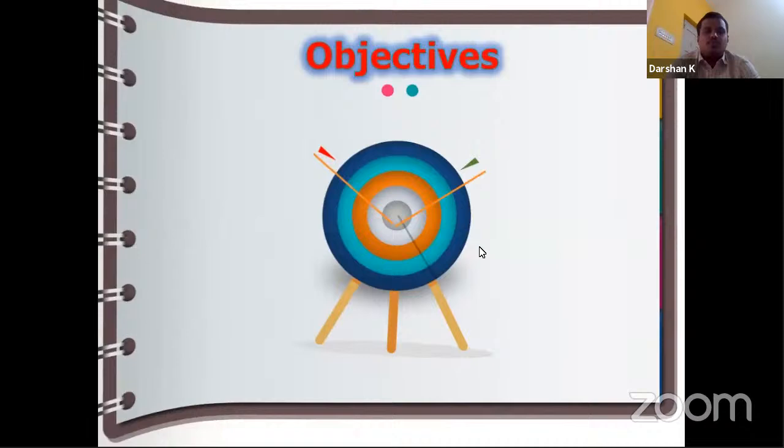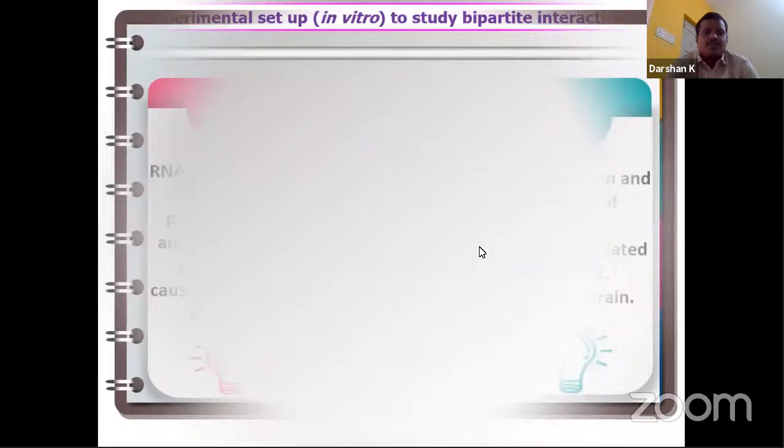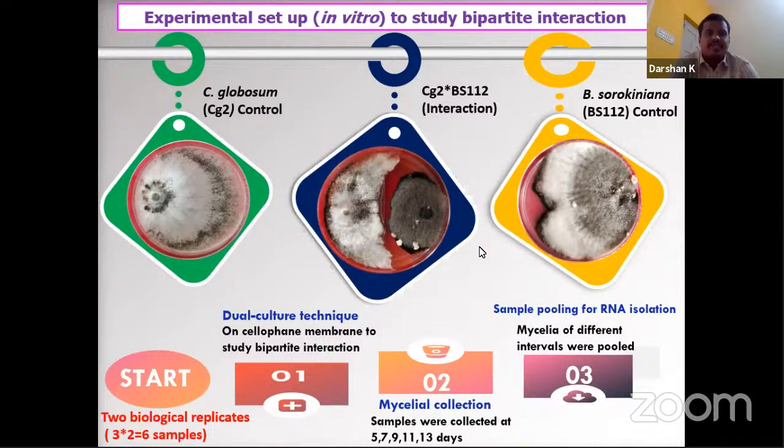The study has two objectives: first, transcriptomic analysis, and second, characterization and validation of potential antagonistic-related genes. In the experimental setup, Chaetomium globosum was used as the biocontrol agent and Bipolaris as the pathogen. Both were grown in dual culture plates on cellophane membrane to study bipartite interactions at different time intervals.